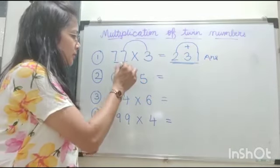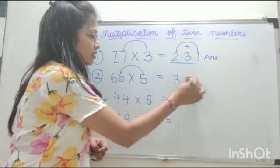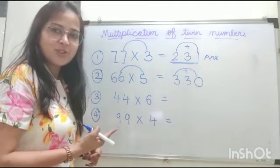Similarly for the second sum, 66 times 5. 6 times 5 is 30. Add up 3 plus 0, that is 3. And this is your answer, 330.